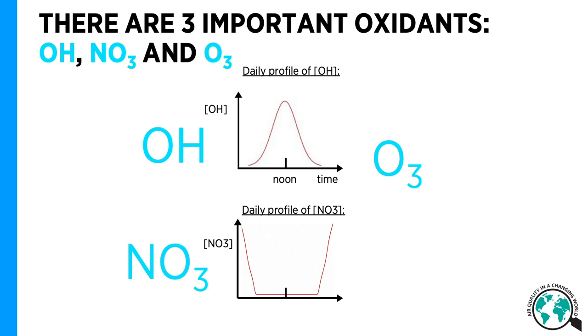There are several oxidants in the atmosphere, with OH, NO3, and ozone being the most important. The oxidants are not equally important at all times, and they do not necessarily react with the same compounds.